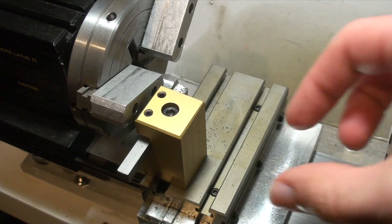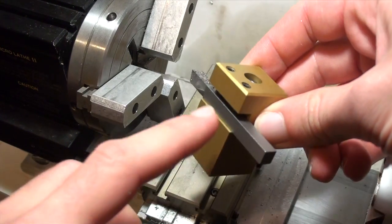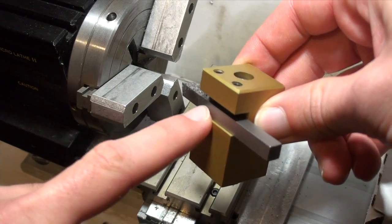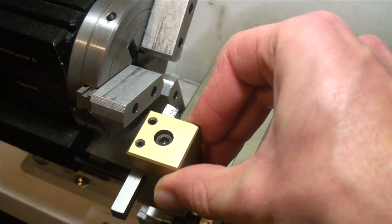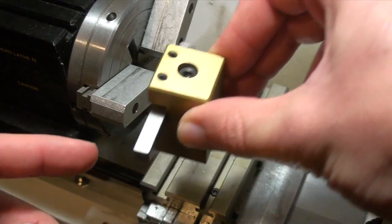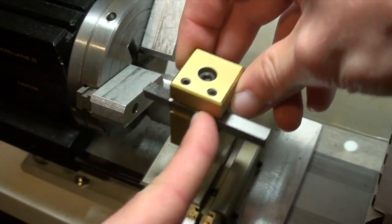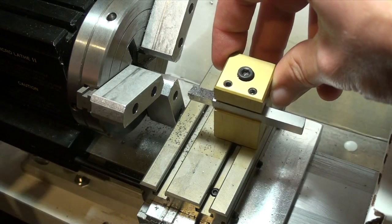So I'm going to pull this stock tool post holder off. It only holds one bit, so if you're facing off some bar stock and you want to bore it out, you're going to have to take this out, put the boring bar in and spin it around so you can bore out your part that you're making.